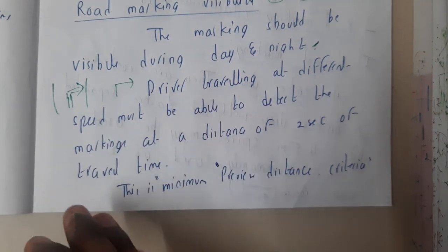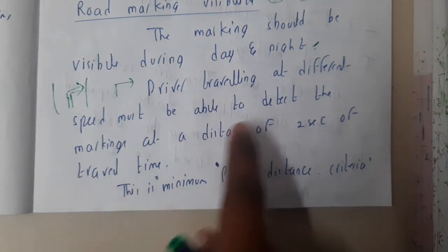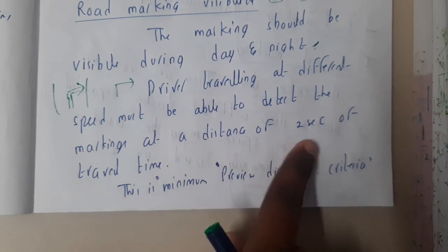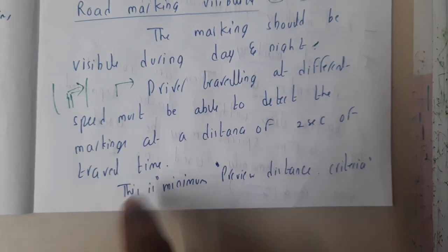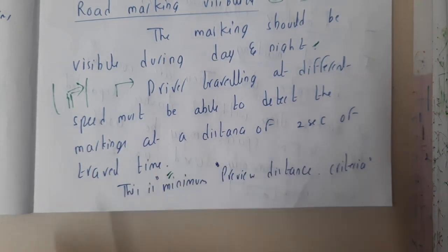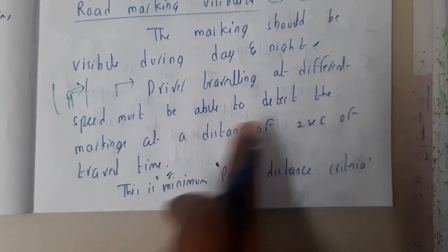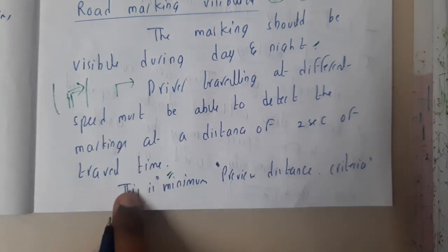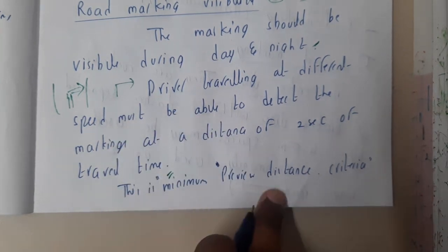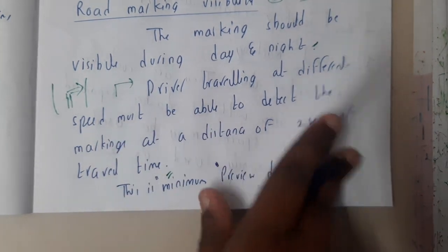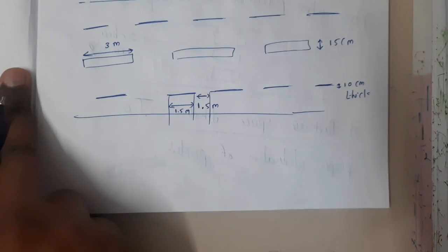Drivers traveling at different speeds must also be able to detect the marking at a distance of two seconds travel time. We will be considering this two seconds as the minimum preview distance.